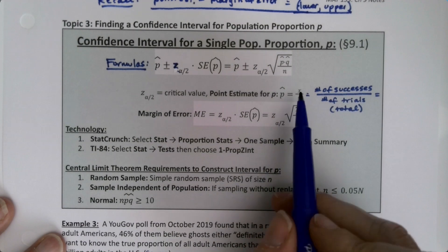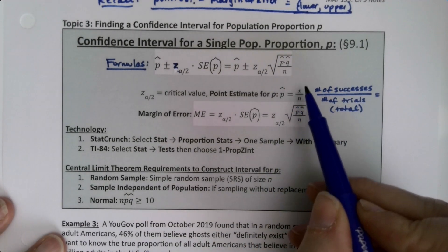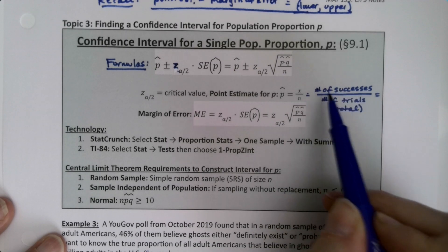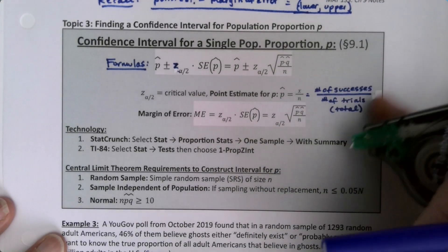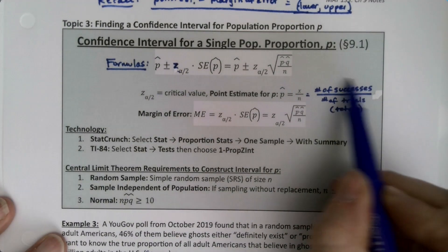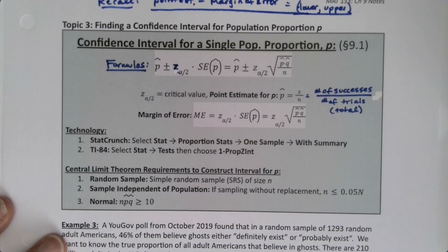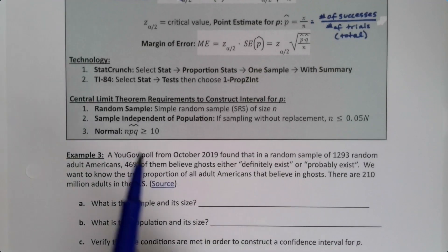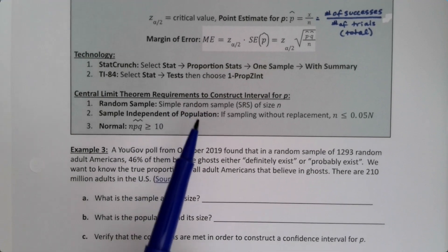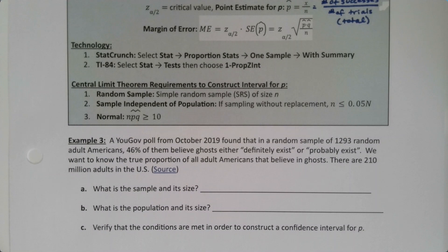P hat, I want to remind us from chapter six, is x over n—the number of successes divided by the number of trials, or the count over the total. We have some technology pieces and requirements which should look familiar: random, independent, and normal, which we learned in chapter eight.